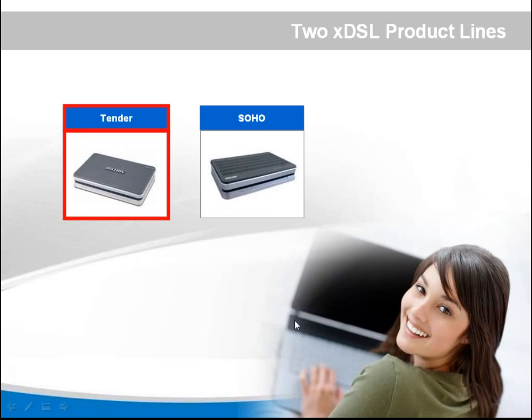The other product line will be for channel business or retail business. It comes with more features, such as a firewall, QoS, and also VPN. Besides, we are trying to introduce one CMS — the central management system based on TR69 — to the SOHO device.